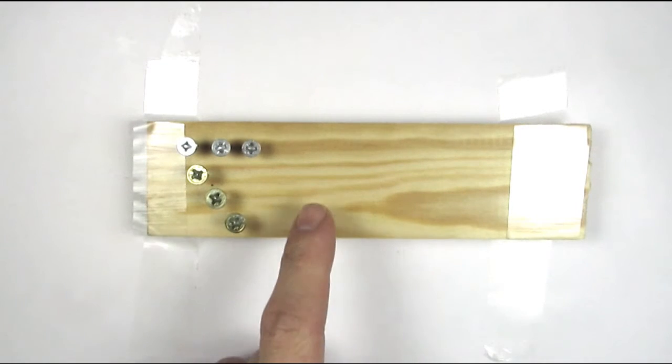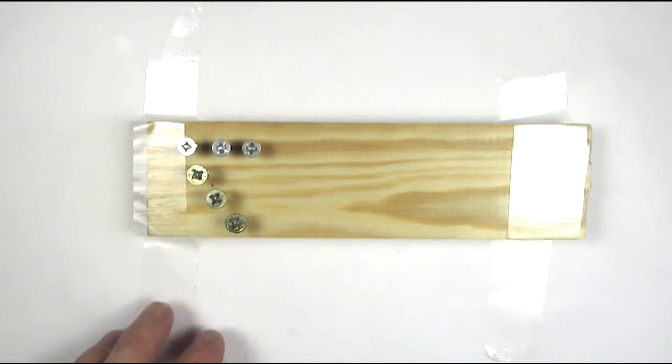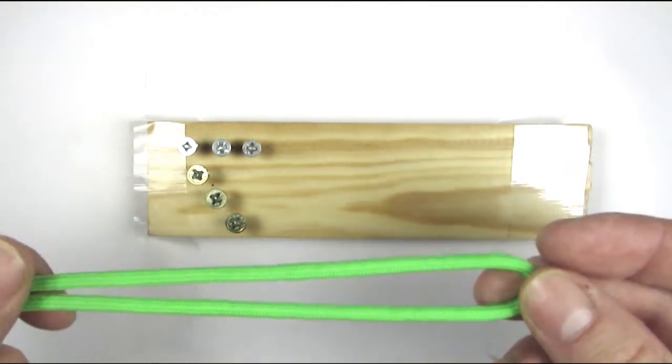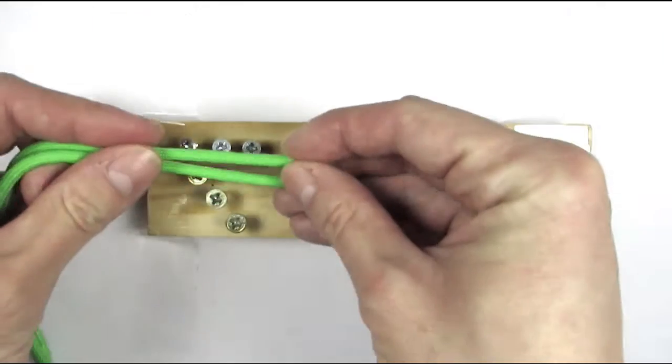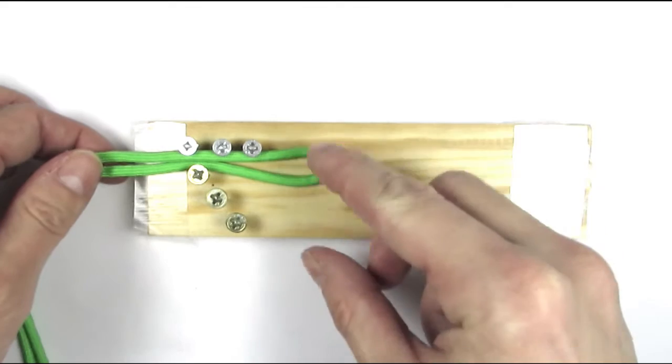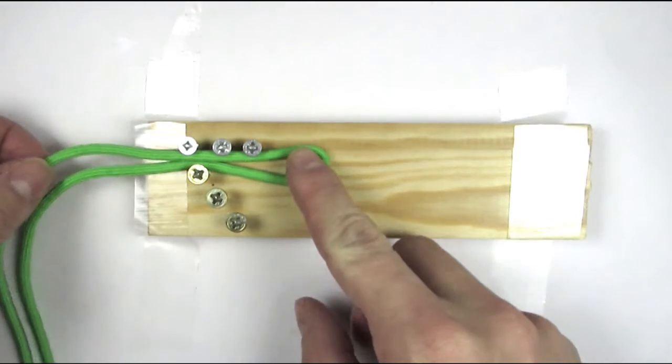The first thing we're going to do is take a piece of paracord and form a bight at the middle, meaning we basically fold the cord in half and place it between the two rows, the top screws and the screws on the side.